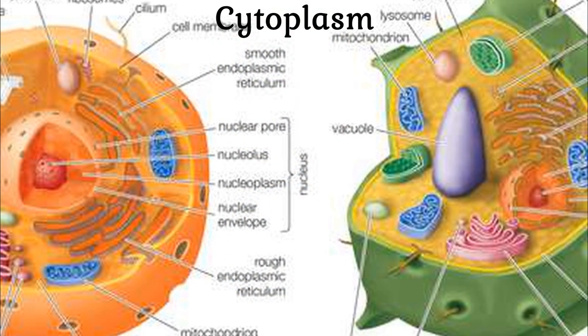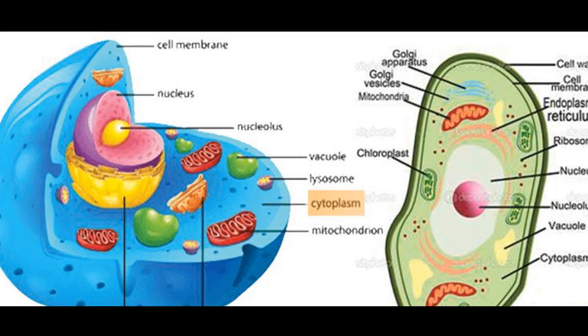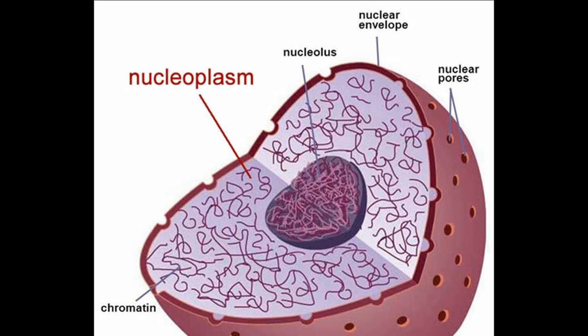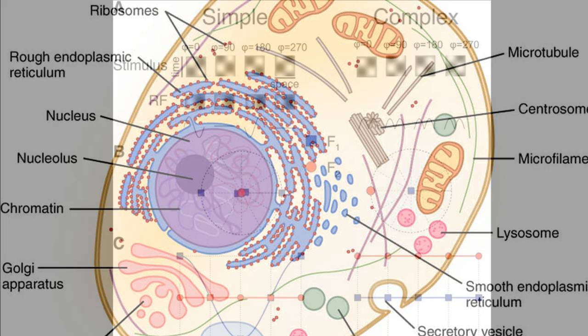Cytoplasm is the protoplasm that occurs between the plasma membrane and the nucleus. Nucleoplasm is a portion of protoplasm that occurs in the nucleus and is limited by a nuclear membrane.